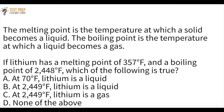The melting point is the temperature at which a solid becomes a liquid. The boiling point is the temperature at which a liquid becomes a gas. If lithium has a melting point of 357 degrees Fahrenheit and a boiling point of 2,448 degrees Fahrenheit, which of the following is true? A: at 70°F lithium is a liquid. B: at 2,449°F lithium is a gas. Or D: none of the above. Pause the video and try this out.